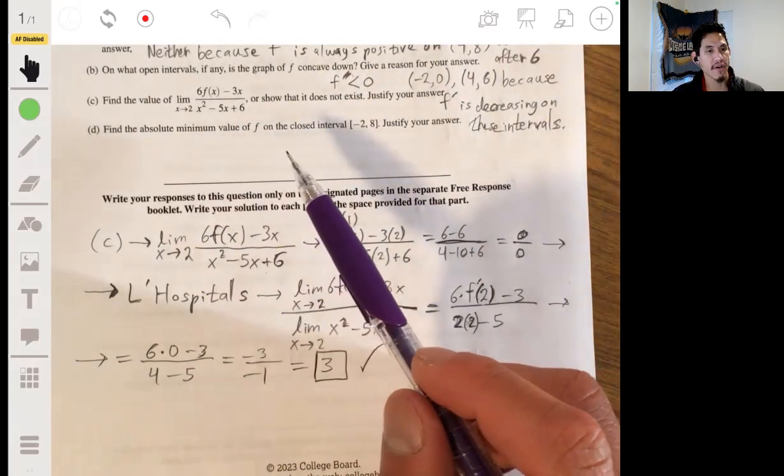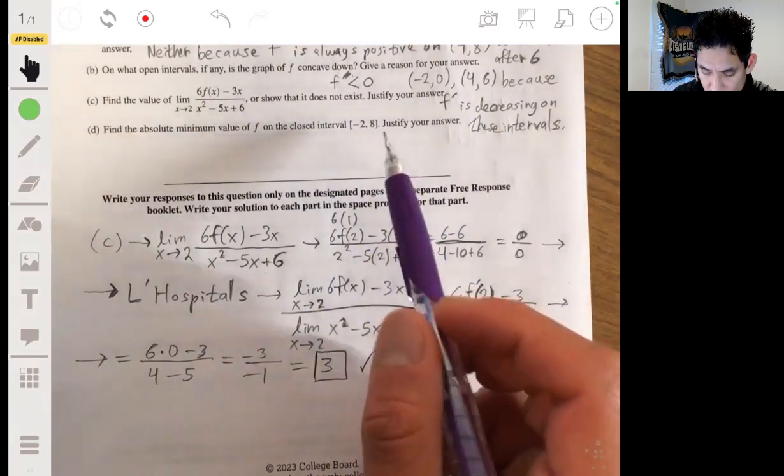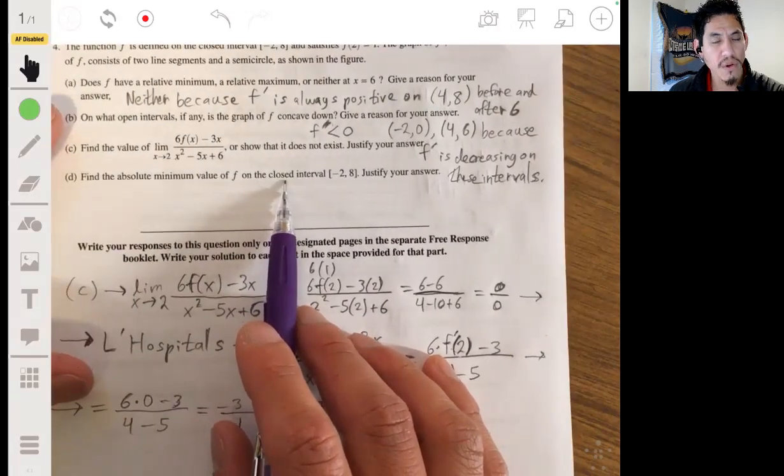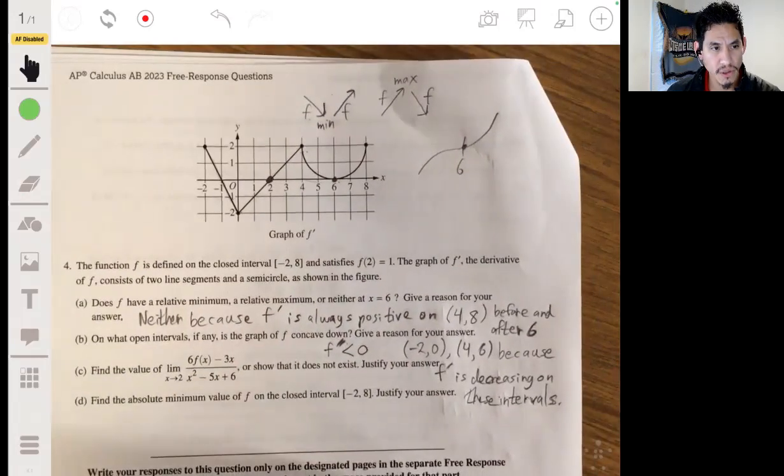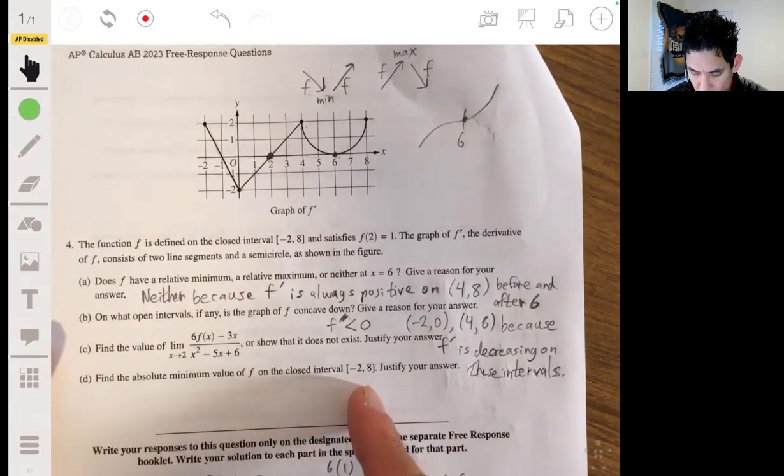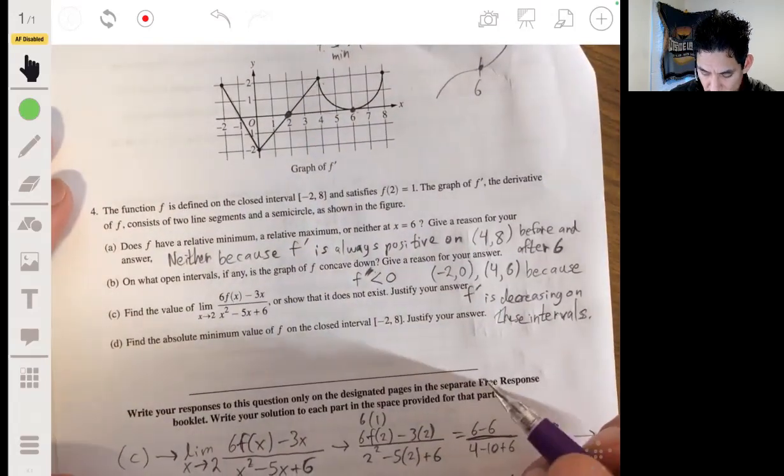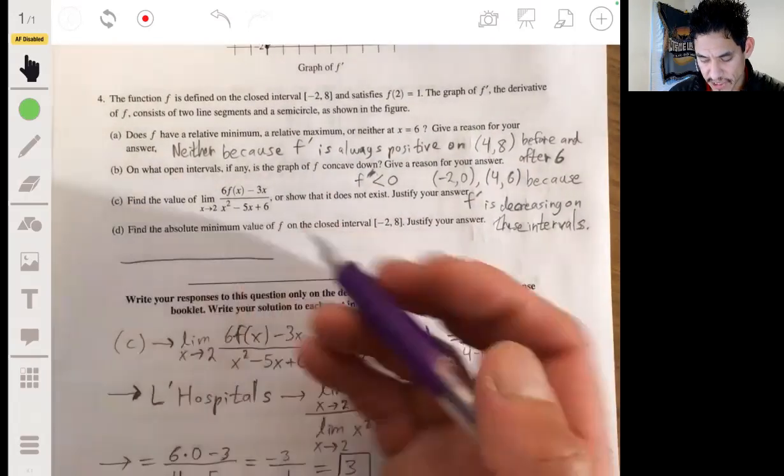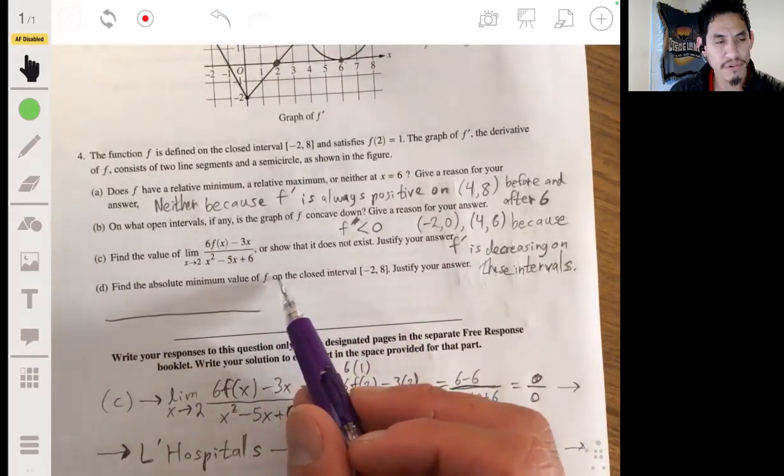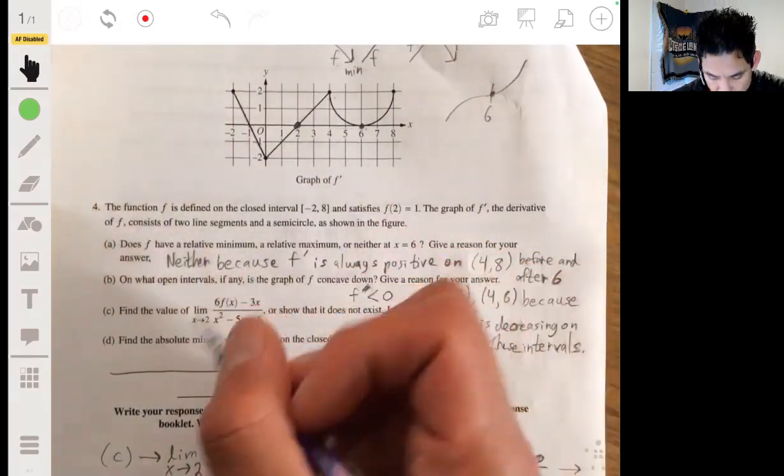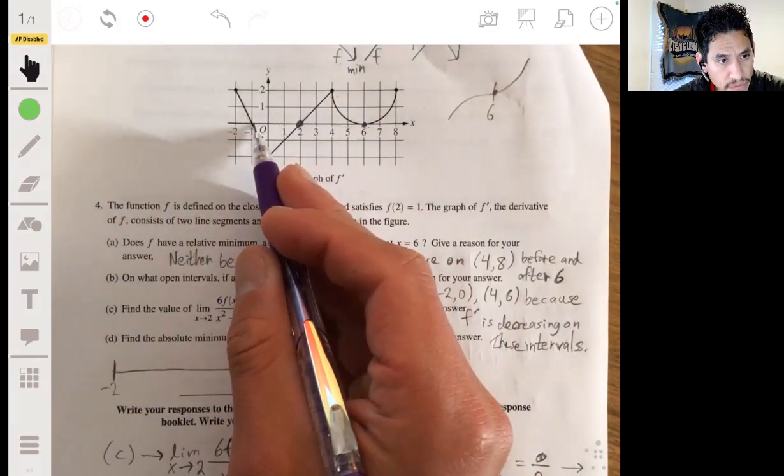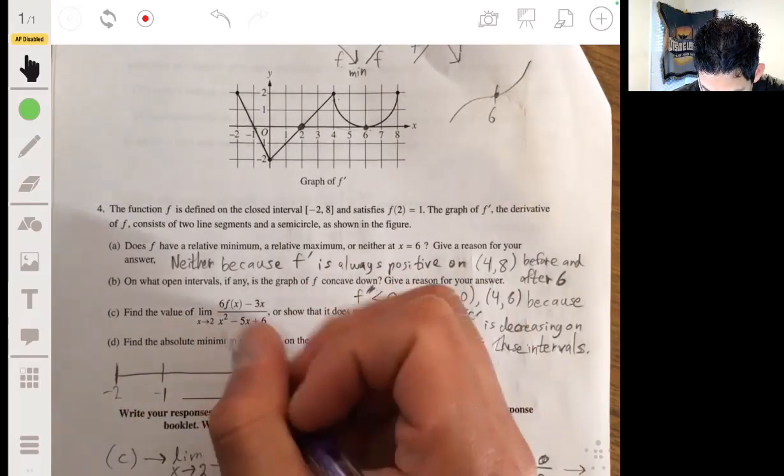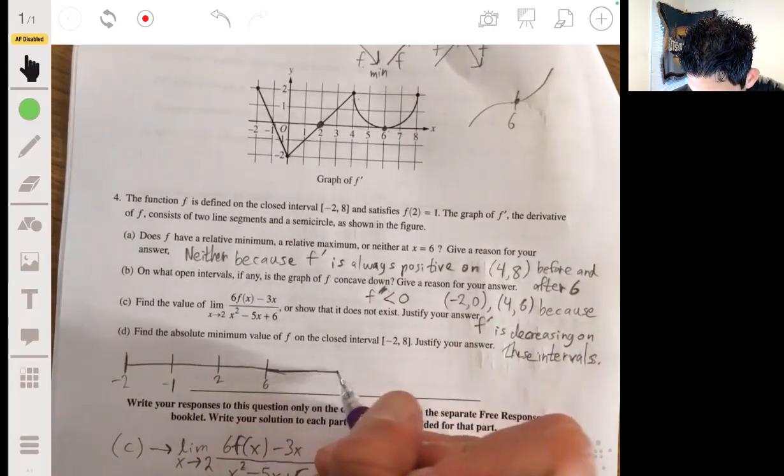All right, and part D, find the absolute minimum value of f on the closed interval from negative 2 to 8. Justify your answer. All right, so this is an interesting one. So remember, a minimum occurs when the graph is decreasing before and increasing afterwards. So looking at identifying points, let's first identify points where f prime of x is 0, because we want to find critical values. Going from the left, negative 2, we have negative 1, we have 2, 6 and 8. Negative 2, negative 1, 2, 6, and 8.